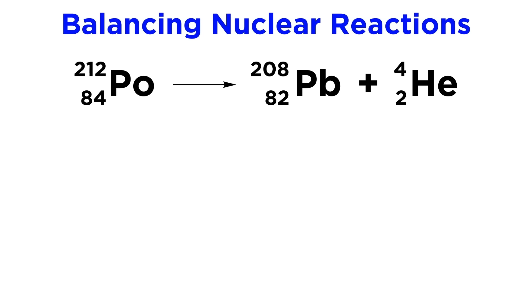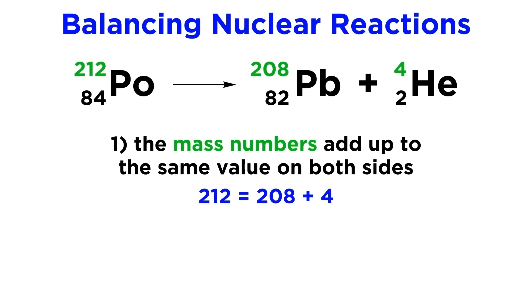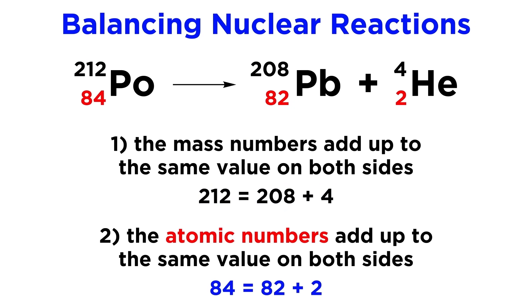Take a look at this nuclear reaction. This says that polonium-212 becomes lead-208 when it emits an alpha particle. This is a valid nuclear reaction because it fulfills two important criteria. Number 1, the mass numbers must add up to the same value on both sides of the equation. On the left we have 212, and on the right we have 208 plus 4, which equals 212. So the mass numbers are valid. Number 2, the atomic numbers, which in a broader context we can think of as charges, must add up to the same value on both sides of the equation. On the left we have 84, and on the right we have 82 plus 2, which equals 84, so the charges are also valid.